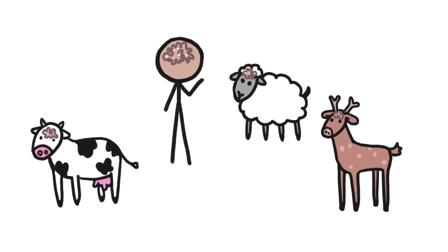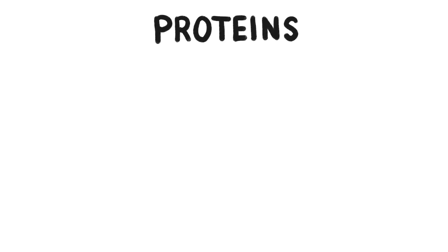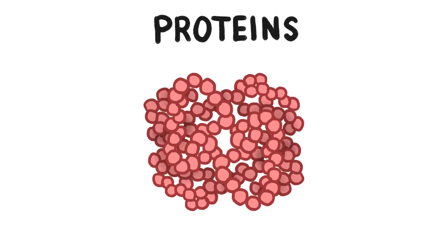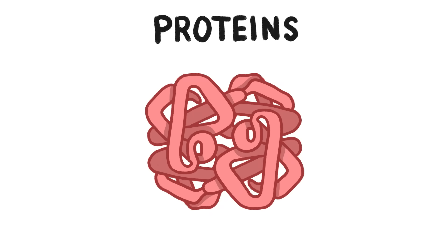These deadly, incurable diseases all start with proteins. Proteins are really long chains of smaller molecules called amino acids. Through intricate molecular origami, these chains get folded into complex 3D shapes that enable them to do all sorts of jobs in living things, like transporting oxygen throughout our bodies.